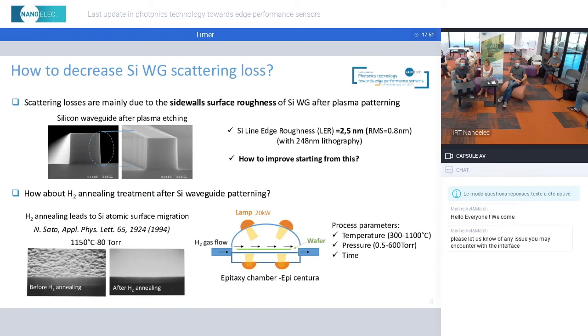Those scattering losses are due to the sidewall roughness of the silicon waveguide after plasma patterning. Typical values that we can get after plasma etching using a KrF 248 nanometer lithography is about 2.5 nanometers, and this can lead to losses far above 2 dB per centimeter, which is not acceptable.